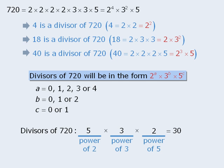Now, before we generalize these results, notice that the number of ways to select a power of 2 is 1 more than the exponent of 2 in the prime factorization of 720. Similarly, the number of ways to select a power of 3 is 1 more than the exponent of 3 in the prime factorization of 720. And finally, the number of ways to select a power of 5 is 1 more than the exponent of 5 in the prime factorization of 720, since the exponent here is 1.